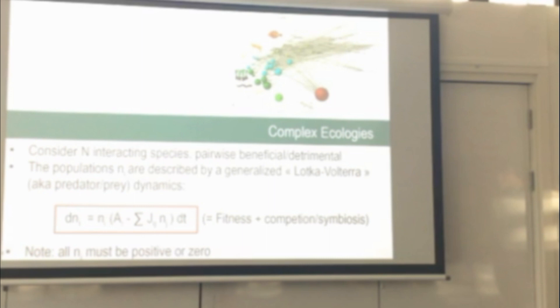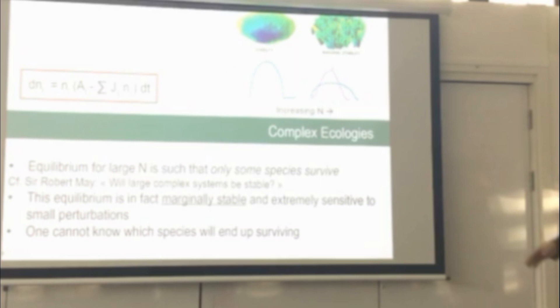So let's move progressively towards more realistic models. This is a model of ecology. So now we have species instead of firms. We'll go back to firms later. And these species are pairwise beneficial or detrimental. So this is a very well-known model. And in this model, the populations N_I are described by a generalized Lotka-Volterra, which is also called the predator-prey dynamics. And this equation, you don't have to look at it in detail. There's a J here, which is similar to my J in the previous slide, positive if species are in symbiosis and negative if they're in competition. This equation is the simplest model that describes fitness of the species and this either competition or symbiosis. Note that there's a constraint, of course, in these equations that all the populations must obviously be positive.